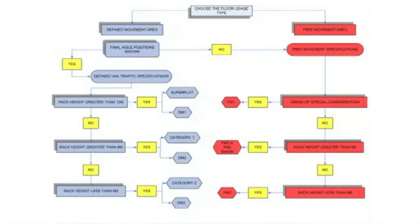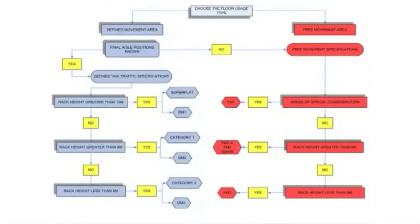I'll mention again: for those who cheat and drop from 13.125 meters to 12.875 meters, you are not serving your client in any shape or form. On the free movement side, for a reach truck in South Africa you'd typically be talking a maximum of 9 to 11 meters, so you would go for FM2 Special or FM2 as the case may be.